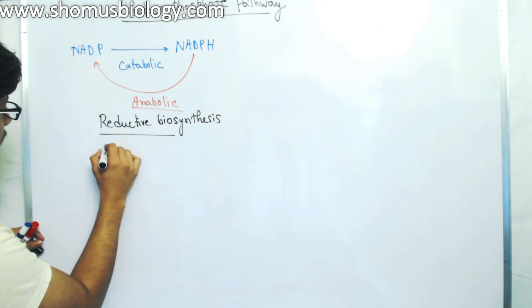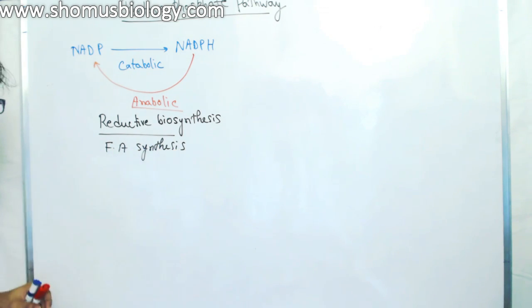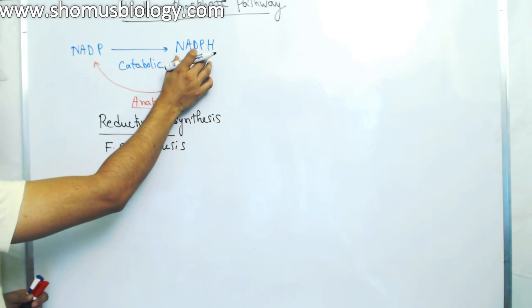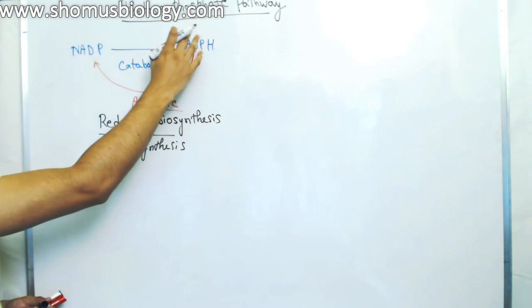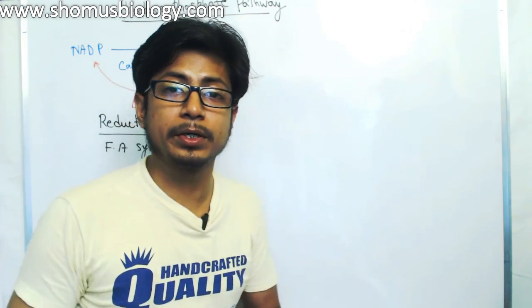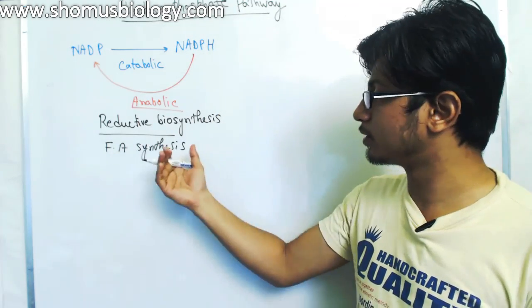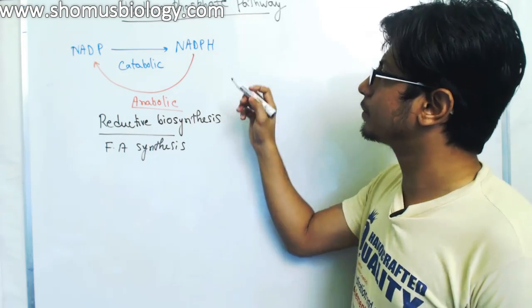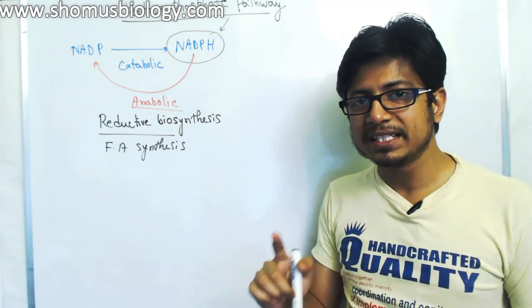Fatty acid synthesis is one of the very important anabolic pathways in our body, and it requires NADPH. Most catabolic pathways already utilize NAD to NADPH conversion. So in order to produce the NADPH required for reductive biosynthesis processes, we need the pentose phosphate pathway to continue in our body.